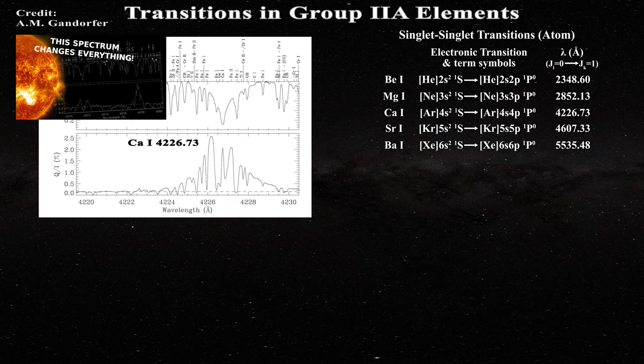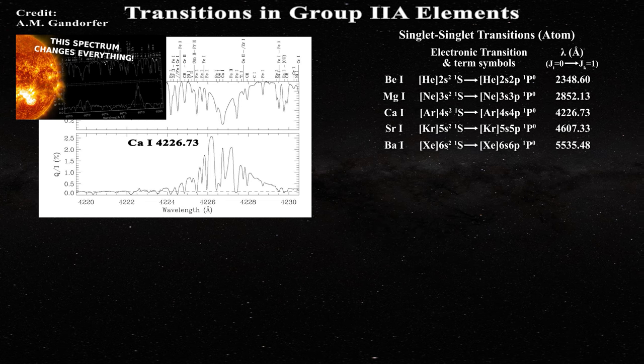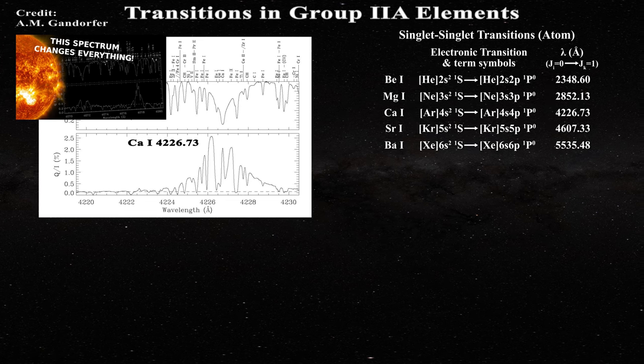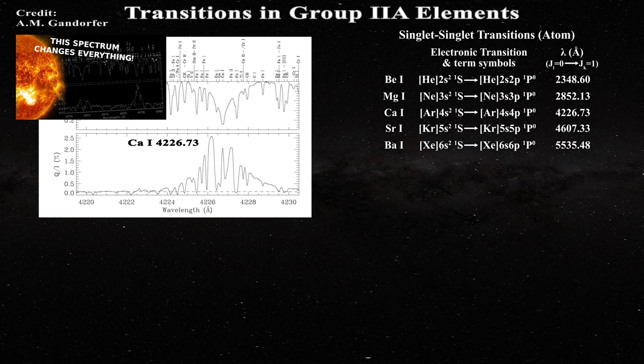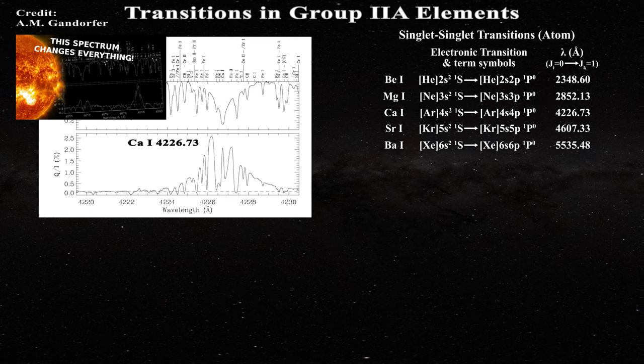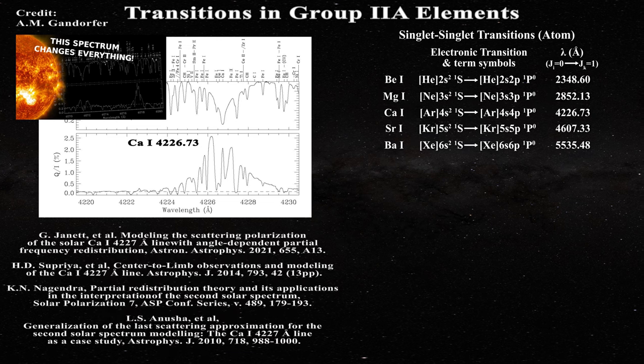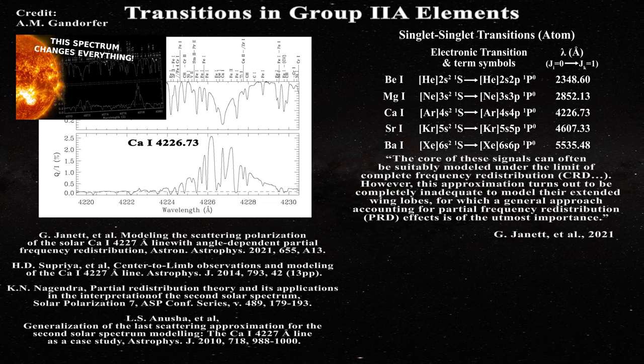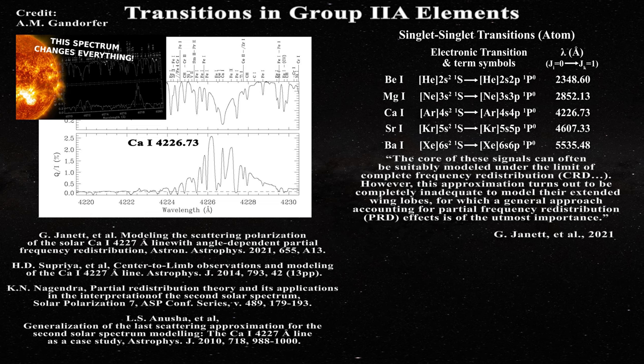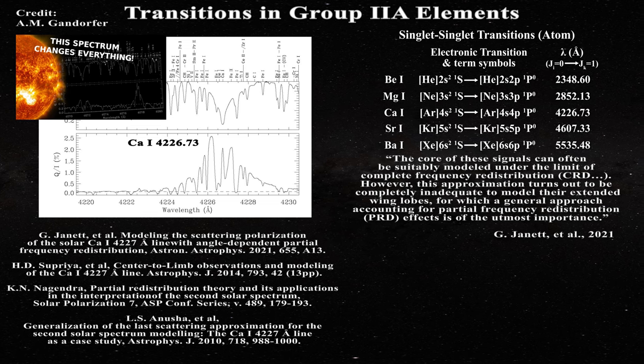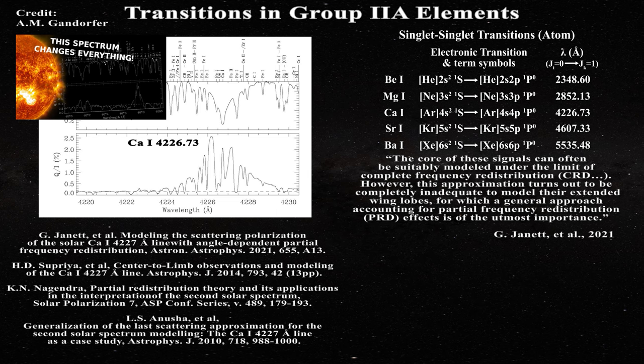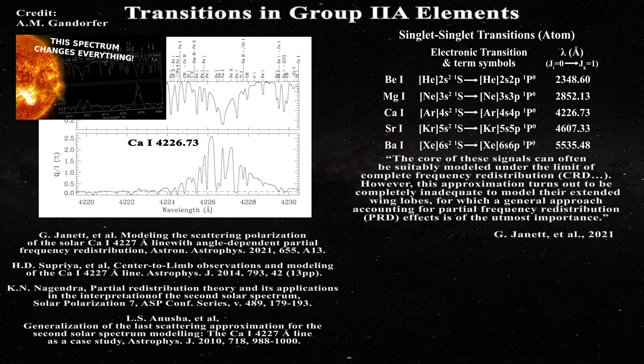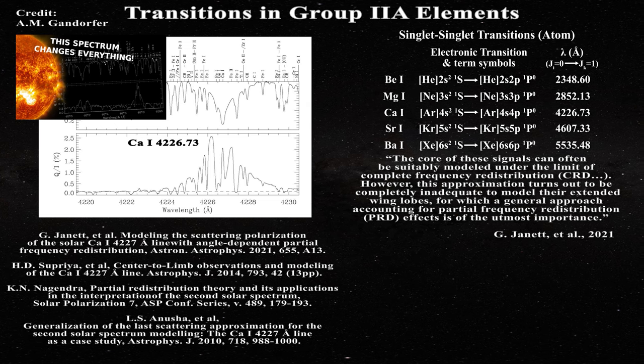Secondly, the proper characterization of the wings of the calcium 1 4227 transition, once again just like for the other strong chromospheric lines both in the Fraunhofer and in the second solar spectrum, absolutely requires the use of partial redistribution, as one can learn in these papers. Here is a relevant quotation. The core of these signals can often be suitably modeled under the limit of complete frequency redistribution, CRD. However, this approximation turns out to be completely inadequate to model their extended wing lobes, for which a general approach accounting for partial frequency redistribution, PRD effects, is of the utmost importance.